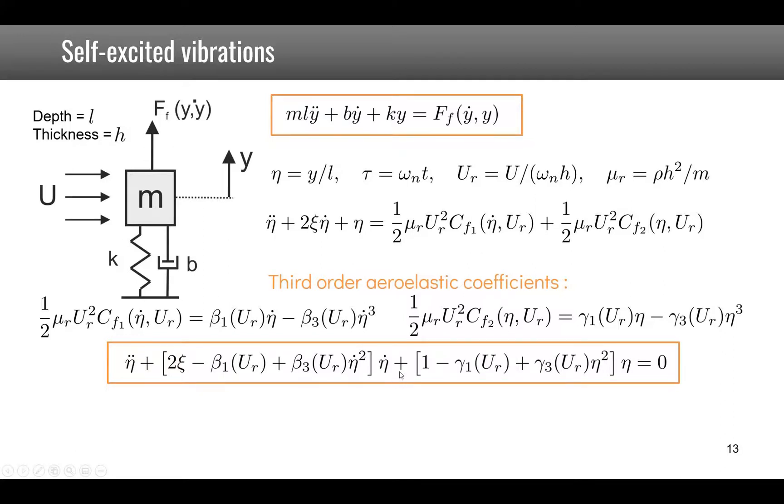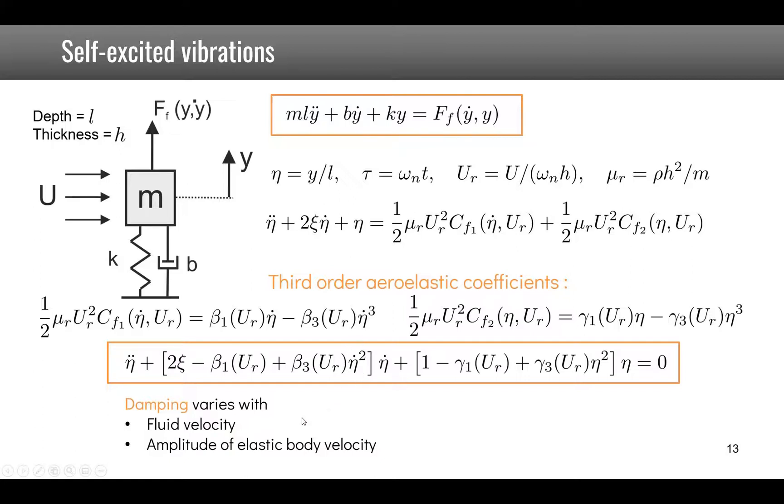So we now have the equations of motion where we see that the damping term will vary with the fluid velocity UR but also with the velocity of the elastic body and a stiffness part which varies also with fluid velocity and amplitude of elastic body displacement.